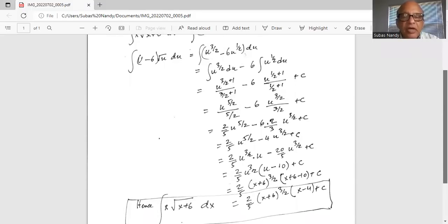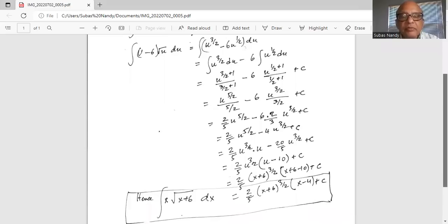Now we will substitute the value of u which is x plus 6. So we have 2 fifth x plus 6 raised to the power of 3 by 2, multiplied by x plus 6 minus 10 inside the parenthesis plus c.